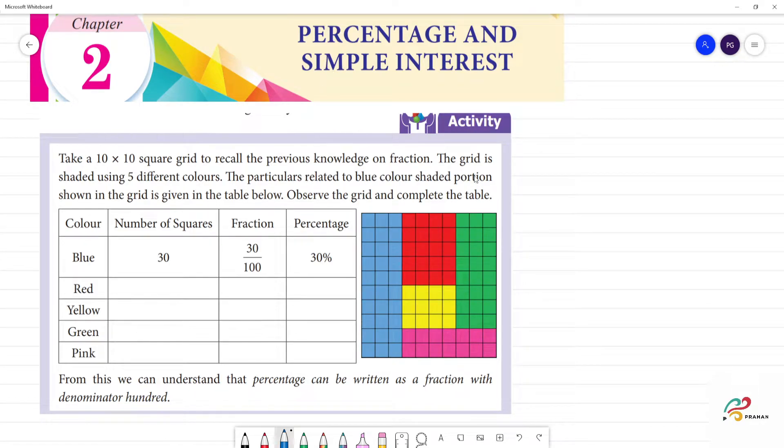After Chapter 2 Percentage and Simple Interest, first activity: take a 10 by 10 square grid, 10 rows 10 columns, total 100 boxes. The grid is shaded using five different colors. The particulars related to blue color shaded portion is shown in the grid.